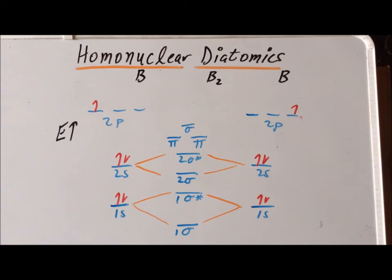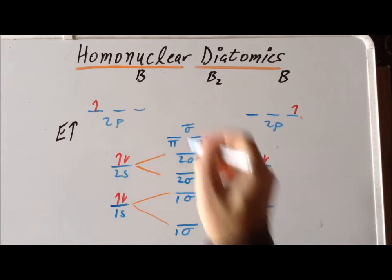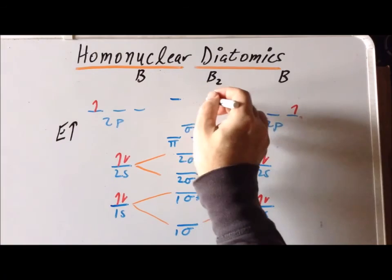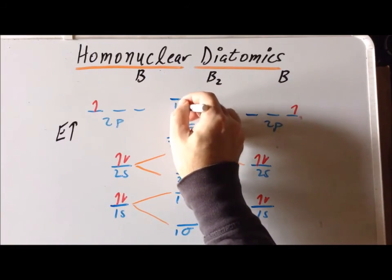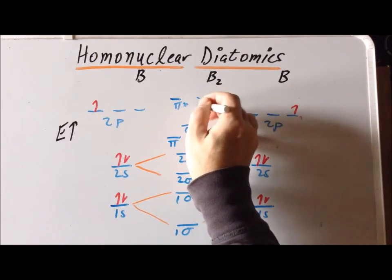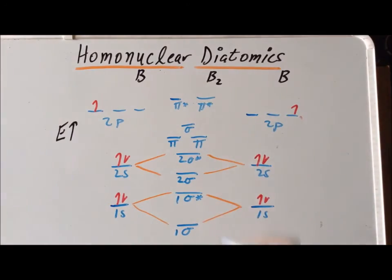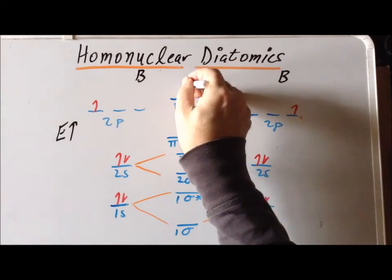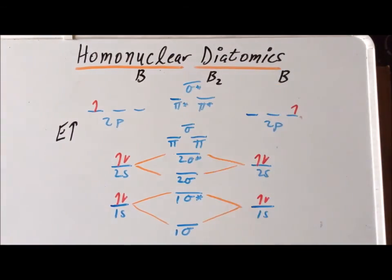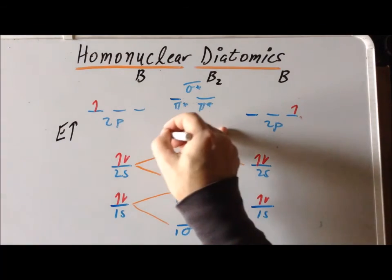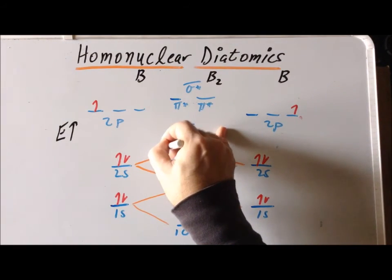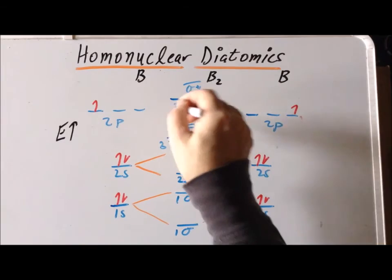At higher energy, we have two pi antibonding combinations, and the highest energy is a sigma antibonding. These are often numbered 3, 3, and 4, 4.